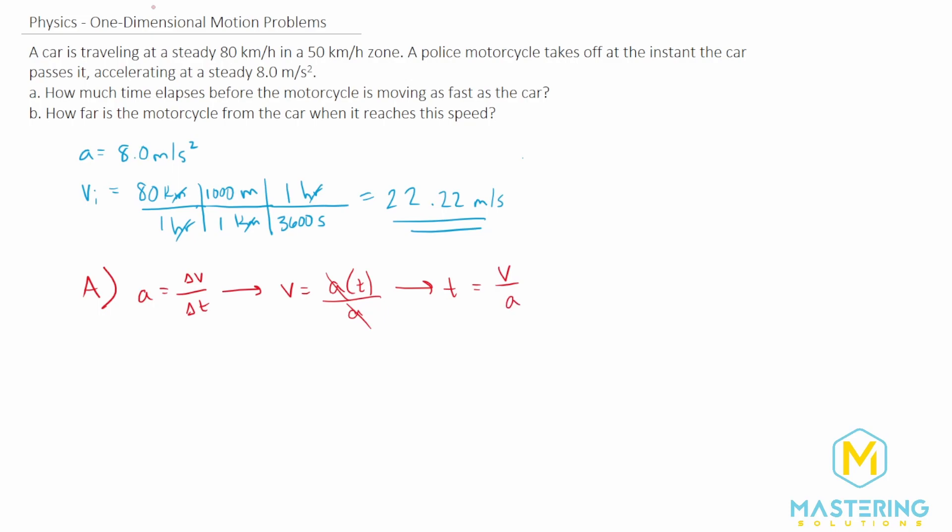If we do those units, we have meters per second on top divided by meters per second squared, which will essentially be multiplying by the reciprocal. So we're multiplying by seconds squared over meters. The meters cancel, one of the seconds cancels, leaving us with seconds, which is obviously the correct unit.